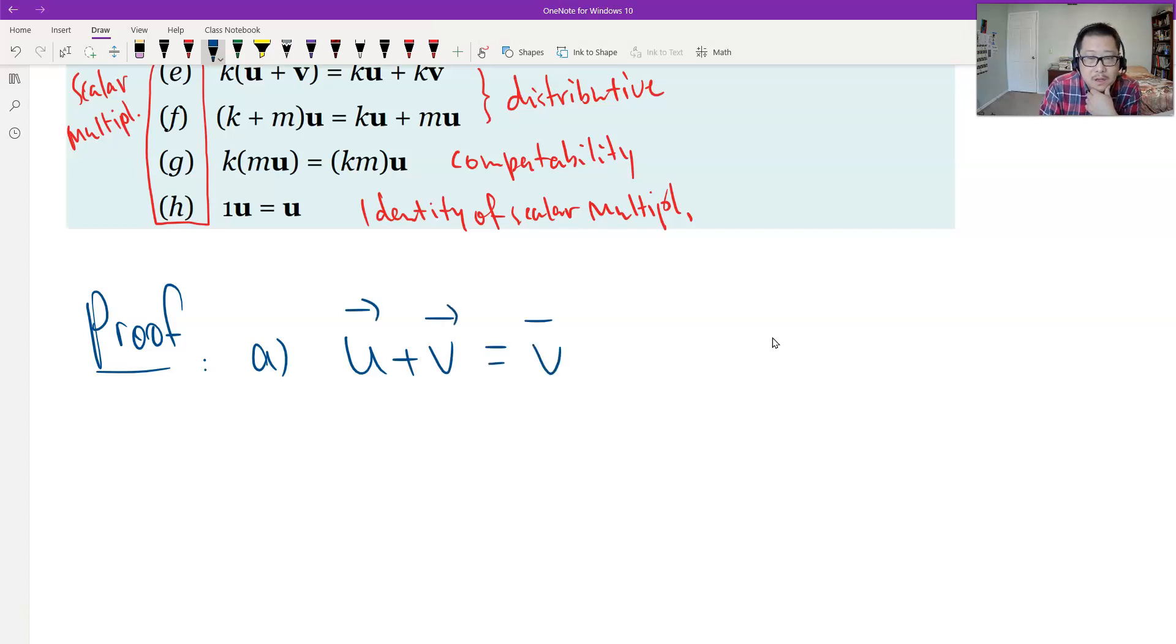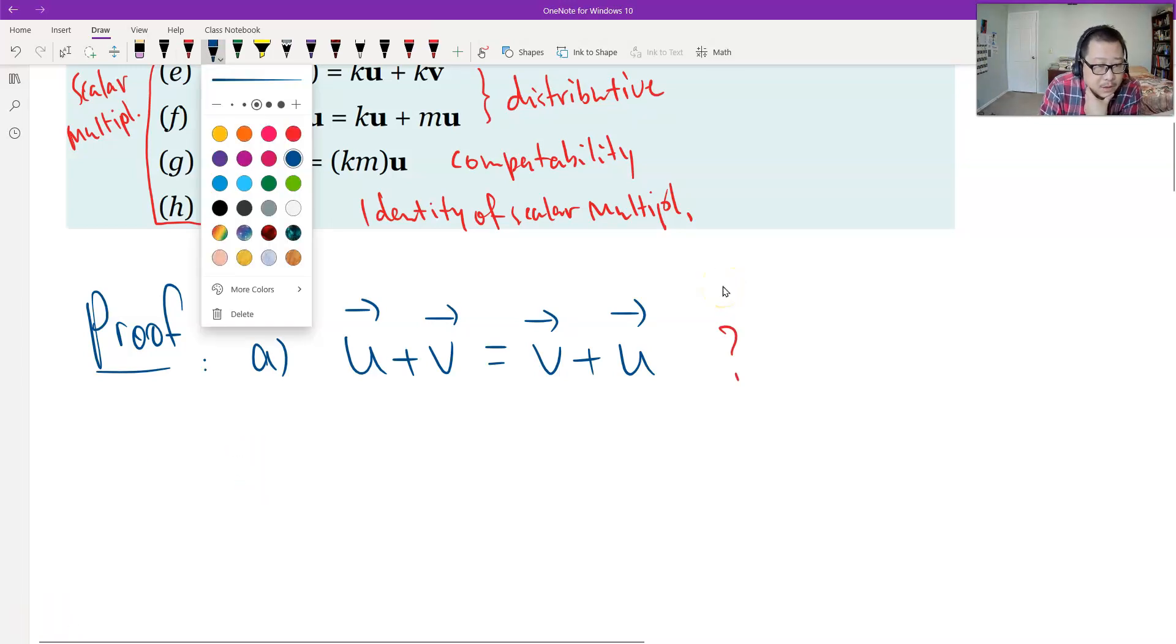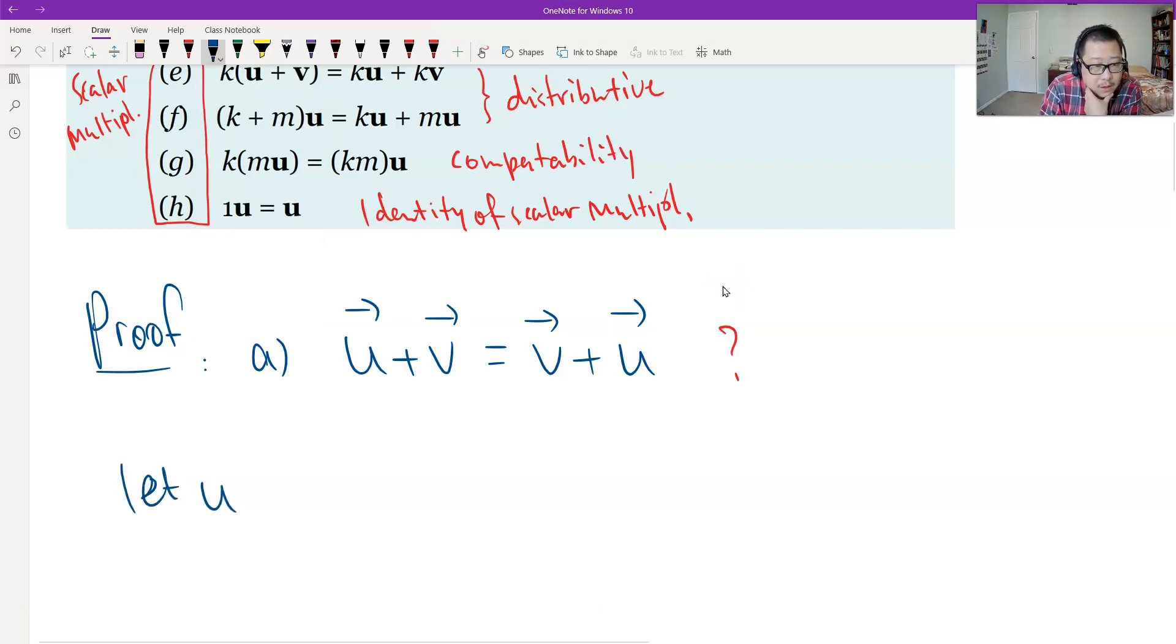Commutative is u plus v equals v plus u. We have the setup, of course. Is this true? Definitely.